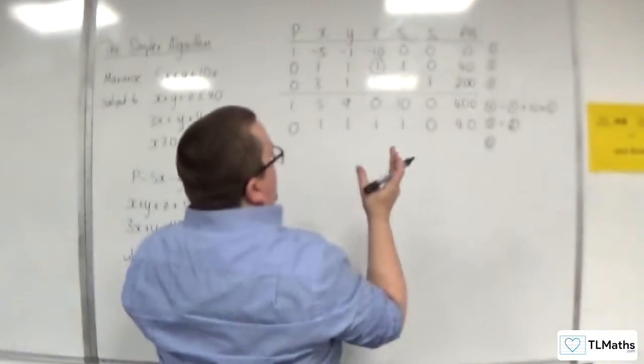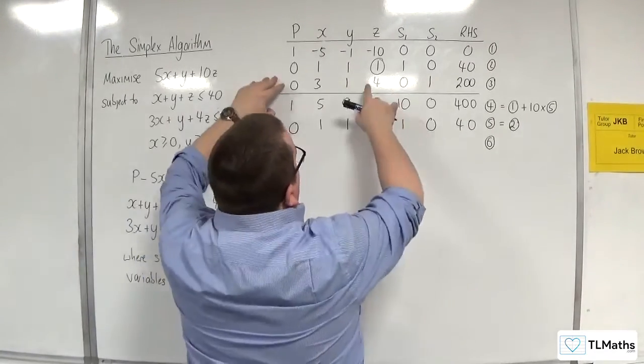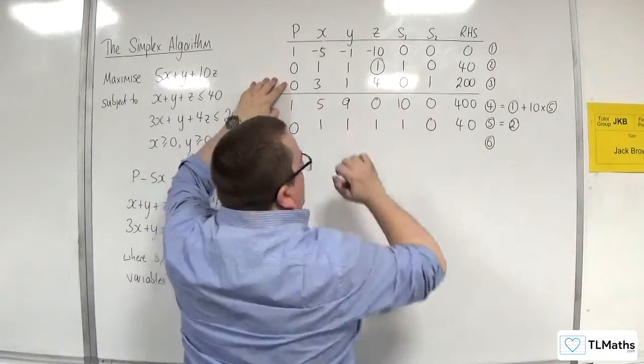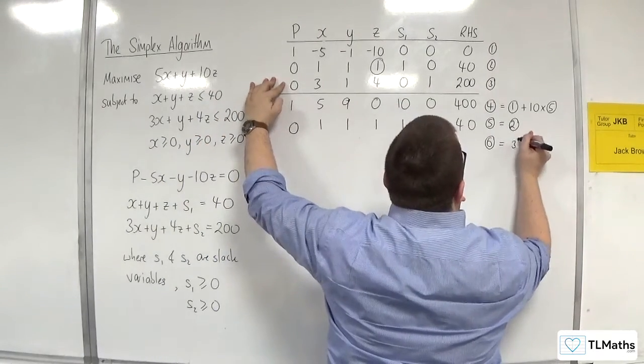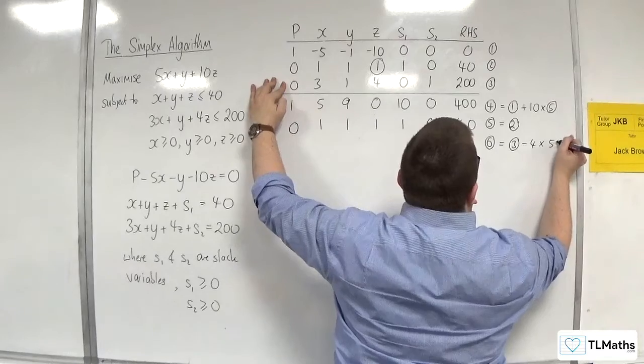OK. Right. Now for row 6, I need to eliminate the 4 there. So I'm going to get row 3 and then take away 4 lots of row 5.